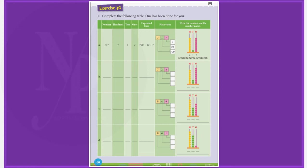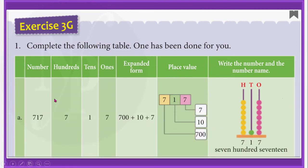Now let us move to exercise 3G. Here we have to complete the following table. One has been done for you. Let us make this table a bit bigger for looking at these numbers clearly. In the same table, we have only the first one, example A, shown here. Let us understand this and after that we will fill the remaining empty spaces. So here in the first column, we have number 717. In 717, there are 7 hundreds, 1 ten and 7 ones.